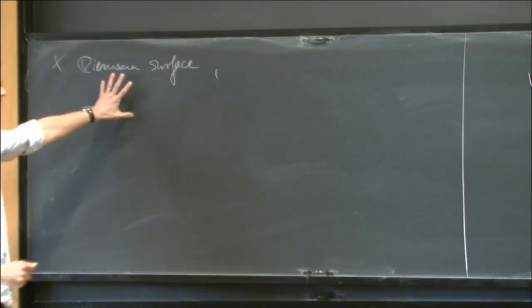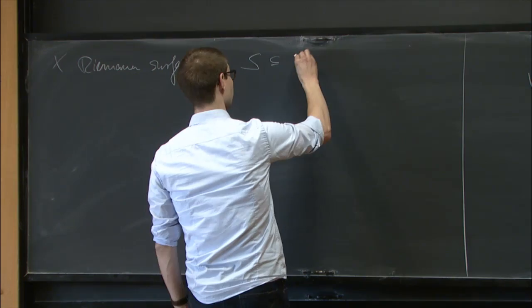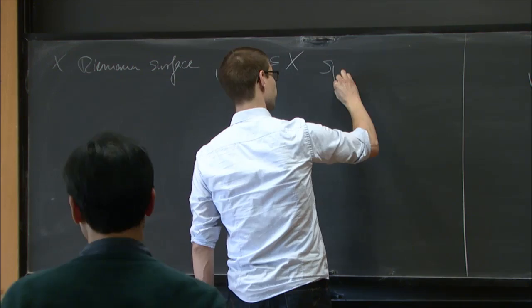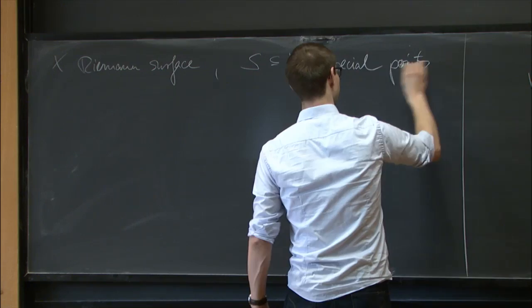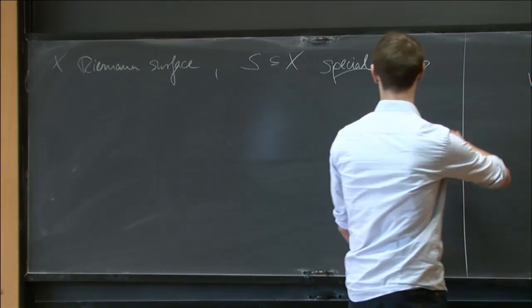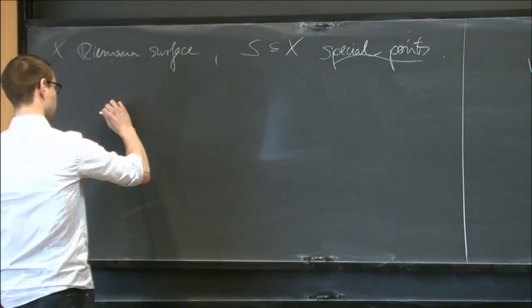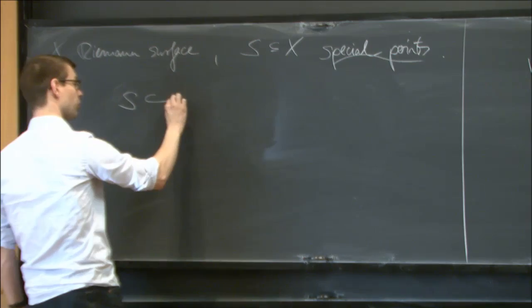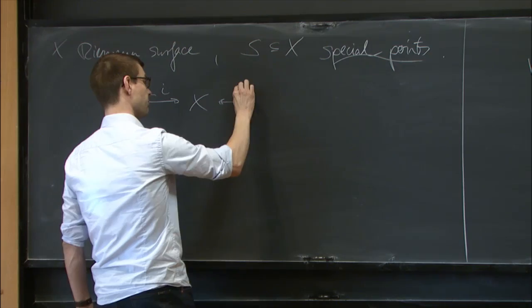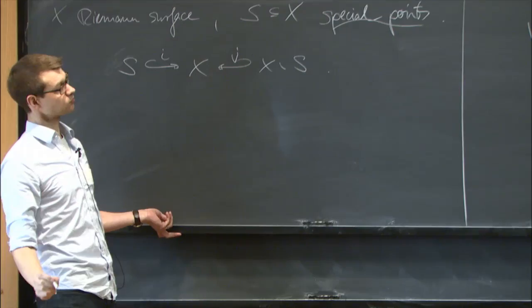I have some finite subset of points, which could possibly be empty, which I want to refer to as the special points or singular points — not singularities of the Riemann surface itself, but singularities of the perverse sheaves sitting on it. This data defines a simple stratification: I have these singular points sitting inside x via a morphism i, and the embedding of the open complement I denote by j.